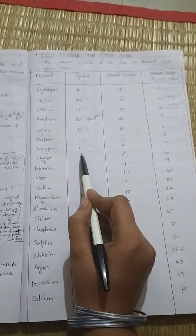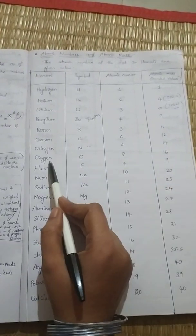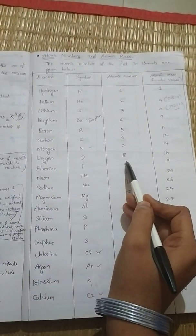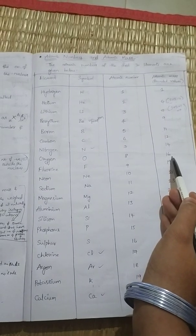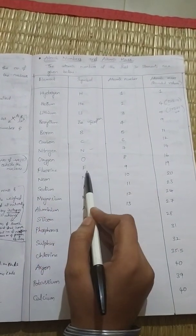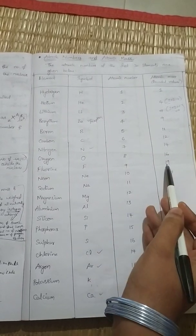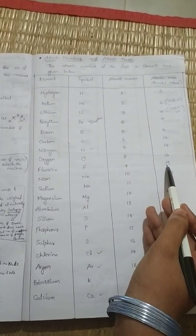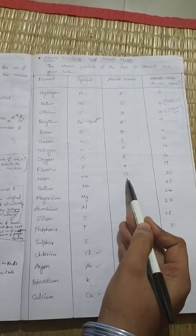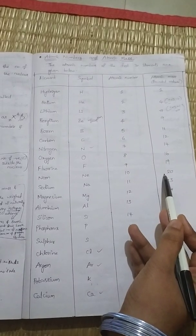Nitrogen: symbol N, atomic number 7, atomic mass 14. Oxygen: symbol O, atomic number 8, atomic mass 16. Fluorine: symbol F, atomic number 9, atomic mass 19. Neon: symbol Ne, atomic number 10, atomic mass 20.